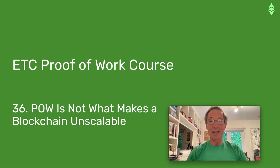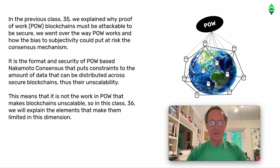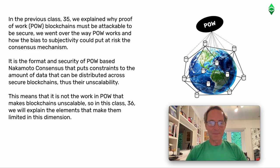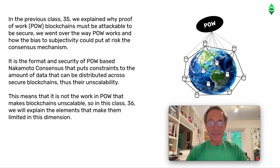Proof-of-Work is not what makes a blockchain unscalable. In the previous Class 35 we explained why Proof-of-Work POW blockchains must be attackable to be secure. We went over the way Proof-of-Work works and how the bias to subjectivity could put at risk the consensus mechanism. It is the format and security of Proof-of-Work based Nakamoto consensus that puts constraints to the amount of data that can be distributed across secure blockchains, thus their unscalability. This means that it is not the work in Proof-of-Work that makes blockchains unscalable, so in this Class 36 we will explain the elements that make them limited in this dimension.